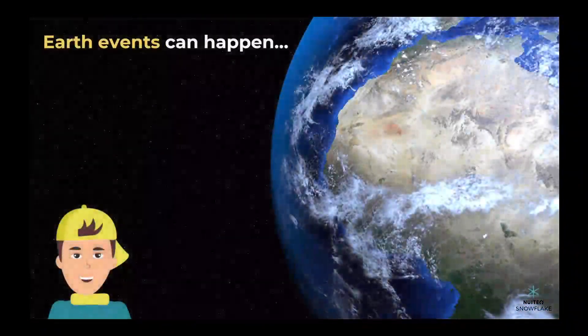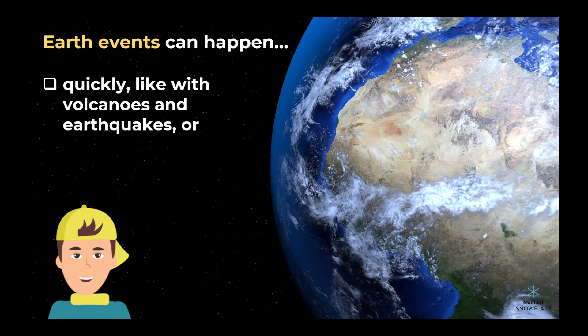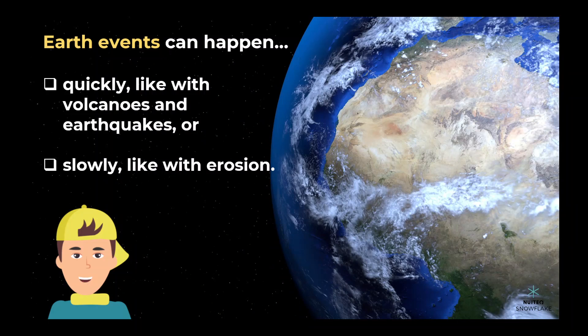So, there you have it. Earth events can happen quickly, like with volcanoes and earthquakes, or they can happen slowly, like with erosion. The earth is always changing, and it's amazing to see all the different things that can happen.